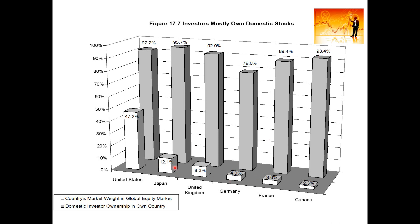This holds for all other markets as well. If you take the United States, about 50% of the world market capitalization is held by the United States. That's why a U.S. portfolio should theoretically comprise 50% U.S. stocks and the remaining 50% from the rest of the world. However, U.S. portfolios also include about 92% U.S. stocks, with only about 8% coming from the rest of the world. This graph basically indicates the severity of the home bias problem across global markets.